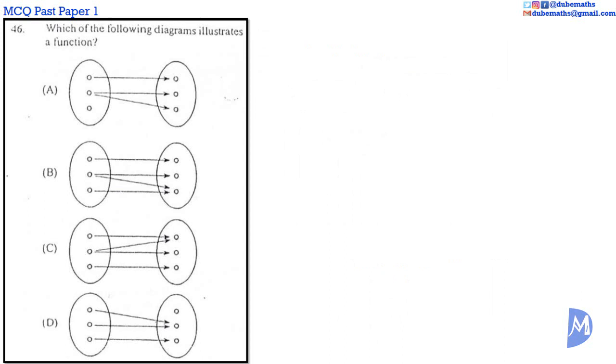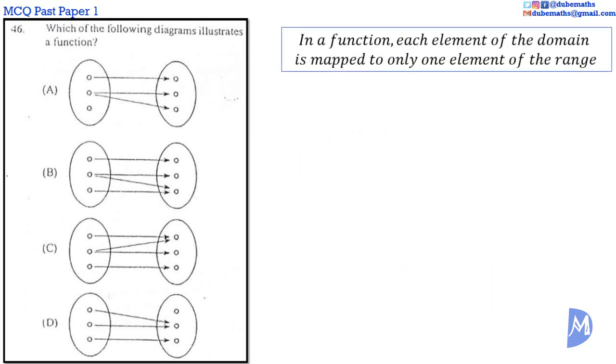Question 46. In a function, each element of the domain is mapped to one and only one element of the range. This means that only one arrow leaves each element of the domain. The answer is D.